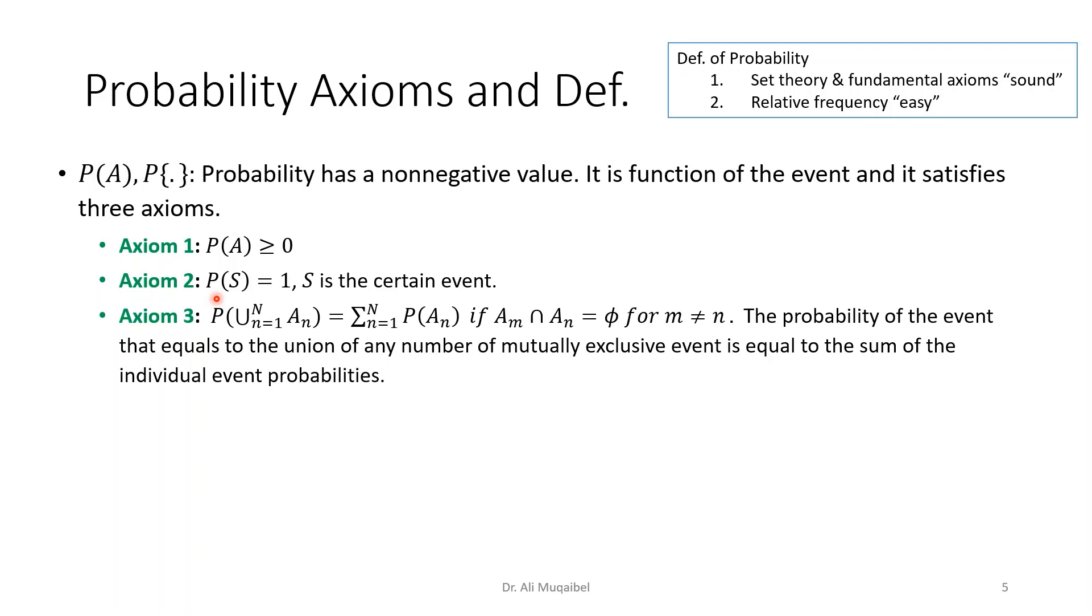Be careful, I don't want to see negative probabilities. This is the way we define it. Axiom 2: Probability of the sample space, probability of being in one of any possible event is going to be one. Probability of the universe is equal to one. This is called the certain event because it includes all possibilities.